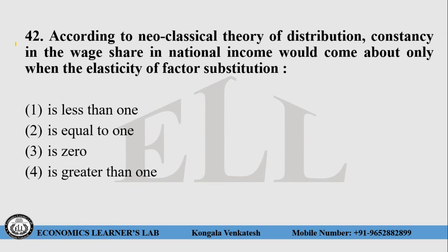Question number 42: According to the new classical theory of distribution, constancy in the wage share in national income would come about only when the elasticity of factor substitution is: choice 1 — less than 1, choice 2 — equal to 1, choice 3 — is 0, choice 4 — greater than 1. The right answer is choice number 2, that is equal to 1.